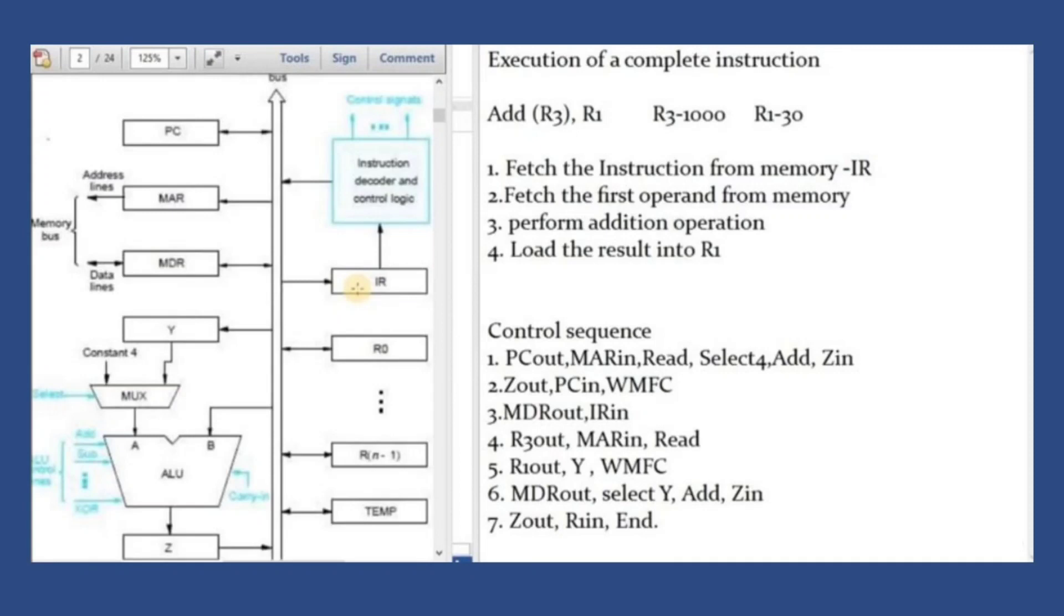After fetching the first operand from the memory that is R3, it is again sent to MAR which reads the data and executes the further process. While data is being fetched from memory at the address stored in MAR, data from R1 register is taken out and put into the Y register.